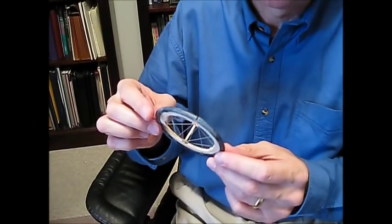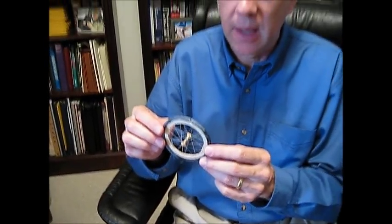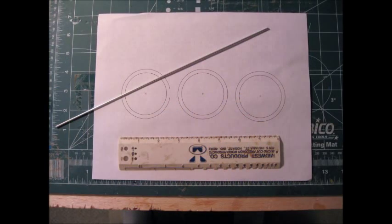Using the lost jig process, you can make any size lightweight spoke wheel for your RC model. Go ahead and draw your wheels of any diameter that you want. Note the tube used for the axle above.